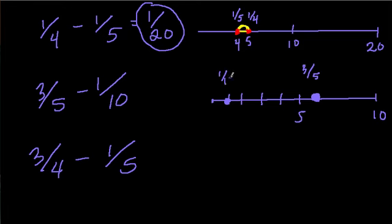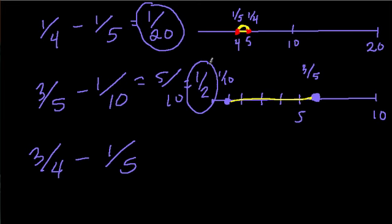And that's 1 tenth. So you're finding what is 3 fifths minus 1 tenth? What's the distance between these two points? What is that? Well, that's 1, 2, 3, 4, 5. 5 out of what? Well, here we're dealing out of 10. So it's 5 tenths. And that's 1 half. So the difference between these two fractions is just 1 half.